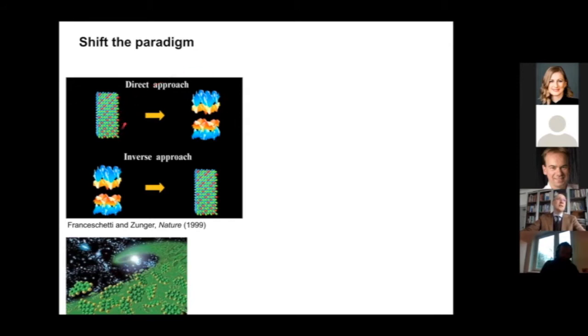This is not really something new. Already in the 90s, people have been thinking about this. One of the seminal papers is here, a paper in Nature from '99, where Franceschetti and Zunger provided a concept where they highlight that if you wish to perform materials design on a computer, you'd have to solve what is known as an inverse problem.